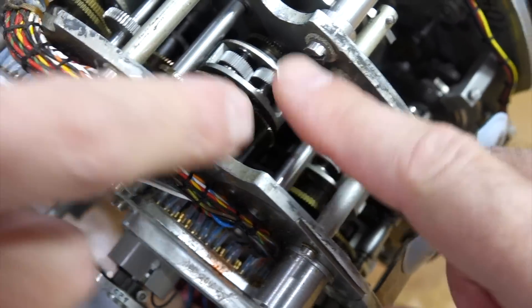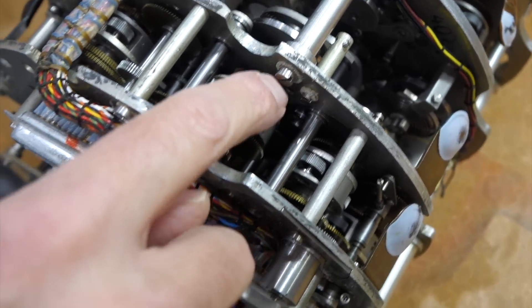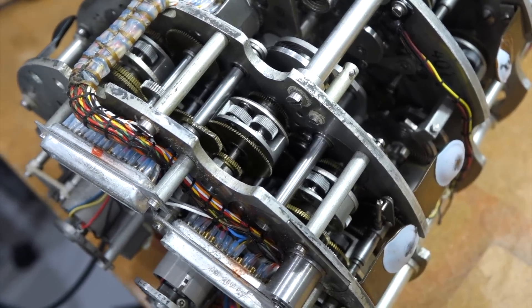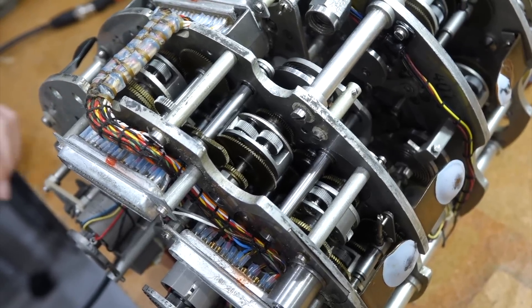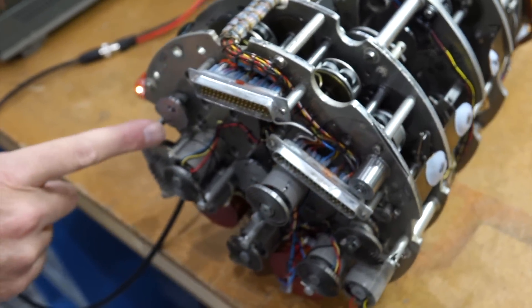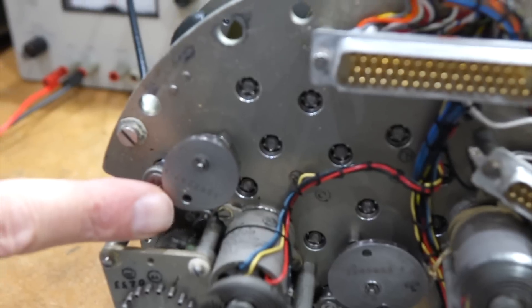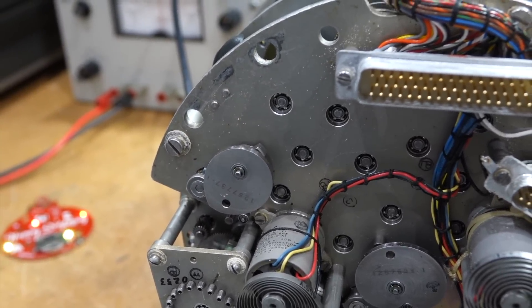Over here, this one. Yeah, so these are differentials, kind of like the differential in your car. It has two inputs, rotational, and then an output that gives you the sum or the difference of those rotations. And then I believe this is the exponential cam that converts your result back into a linear value. So that's how you get multiplication or division.